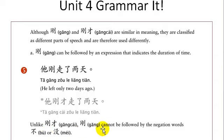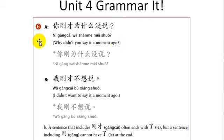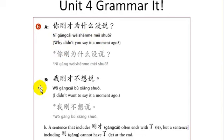Unlike 刚才, 刚 cannot be followed by 不 or 没. For example: 你刚才为什么没说? — why didn't you say something a moment ago? You can't say 你刚为什么没说. Similarly, 我刚才不想说 — I didn't want to say anything a moment ago. You can't say 我刚不想说. When you have negation, it has to be 刚才.